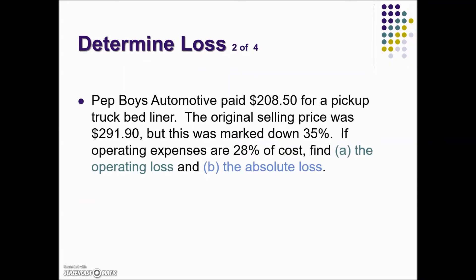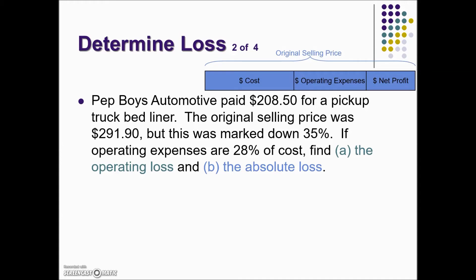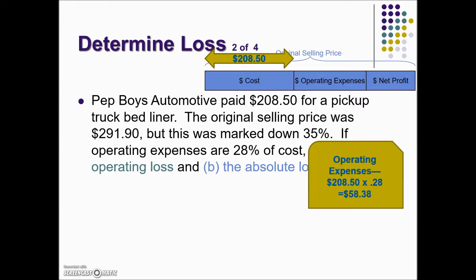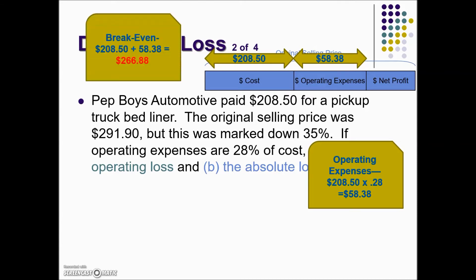Pep Boys Automotive paid $208.50 for a pickup truck bed liner. The original selling price was $291.90, but this was marked down 35%. If operating expenses are 28% of cost, find the operating loss and the absolute loss. The cost is $208.50. Operating expenses are 28% of cost, so 28% times the cost gives us $58.38. Adding cost and operating expenses together gives us the break-even point.